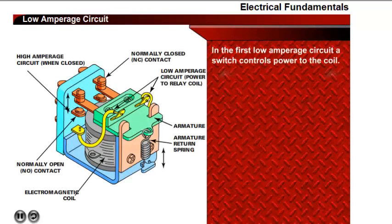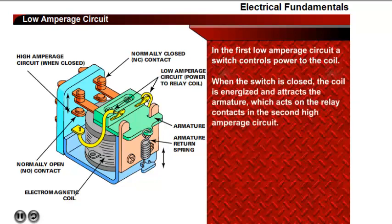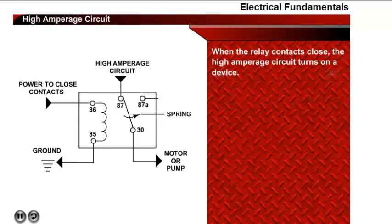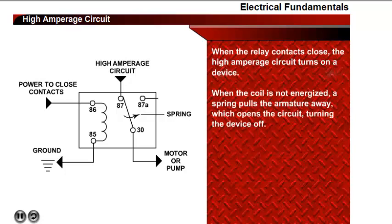In the first low amperage circuit, a switch controls power to the coil. When the switch is closed, the coil is energized and it attracts the armature, which acts on the relay contacts in the second high amperage circuit. When the relay contacts close, the second high amperage circuit turns on a device, such as a motor or pump. When the coil is not energized, a spring pulls the armature away, opens the circuit, and the motor or pump is turned off.